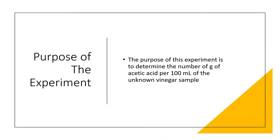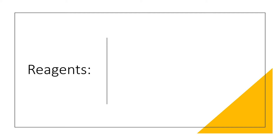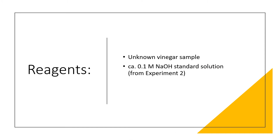The purpose of today's experiment is to determine the number of grams of acetic acid per 100 ml of unknown vinegar sample. We know that the principal constituent in the vinegar is acetic acid. The reagents we will be using are an unknown vinegar sample, 0.1 mol of sodium hydroxide solution, and phenolphthalein indicator solution.